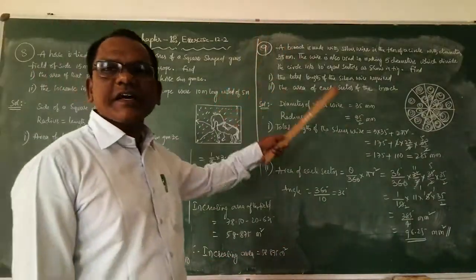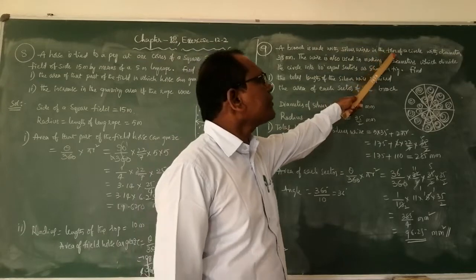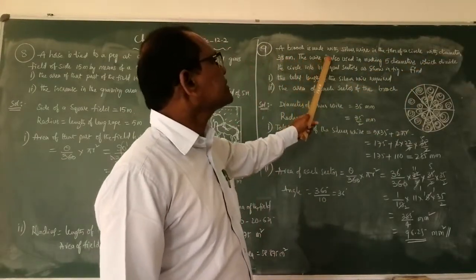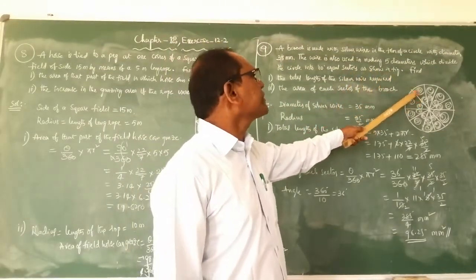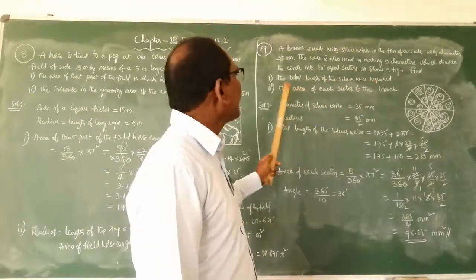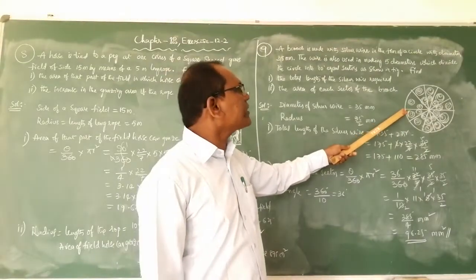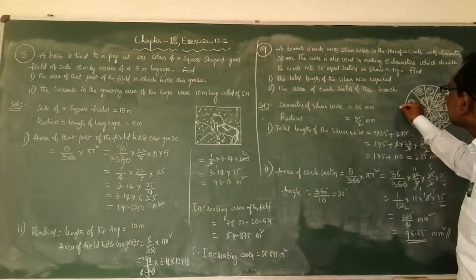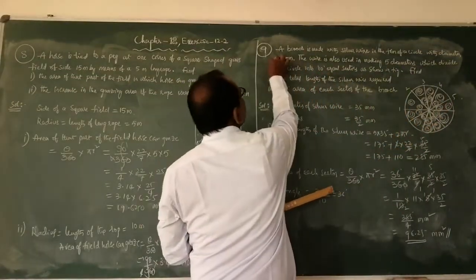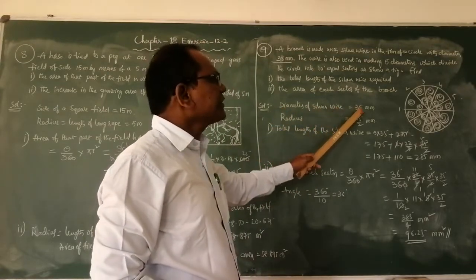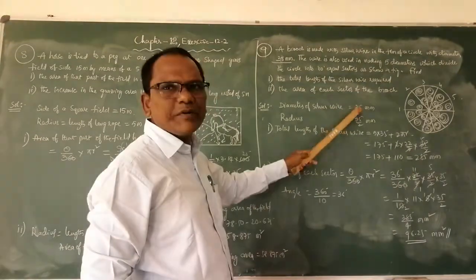Now for the 9th problem: a brooch is made with silver wire in the form of a circle with diameter 35 mm. The wire is also used in making 5 diameters which divide the circle into 10 equal sectors as shown in the figure. Find the length of the silver wire required, and find the area of each sector. The diameter of the circle is 35 mm, so radius = 35/2 mm.